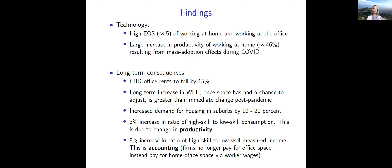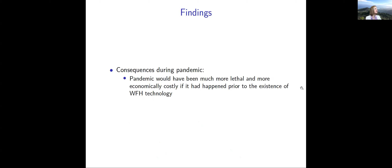Long-term consequences: office rents in the central business district will fall about 15%. There's actually a larger increase in the share of hours worked from home in the long term than immediately post-pandemic, because you need time for residential space to adjust — people get larger homes with home offices, allowing them to work more from home. There's increased demand for housing in the suburbs by 10–20%. The work-from-home benefit goes directly to high-skill workers because low-skill workers cannot work from home, leading to an even bigger increase in measured income inequality.